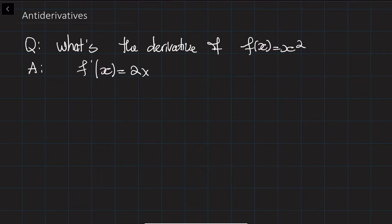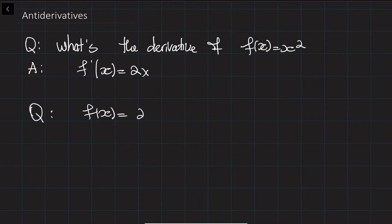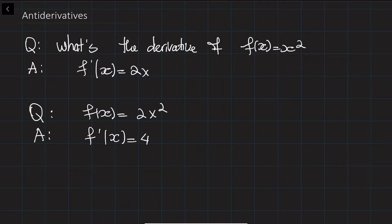If I ask you another question — what is the derivative of f of x which is equal to 2x squared — then you can tell me that the derivative of this function is equal to 4x.